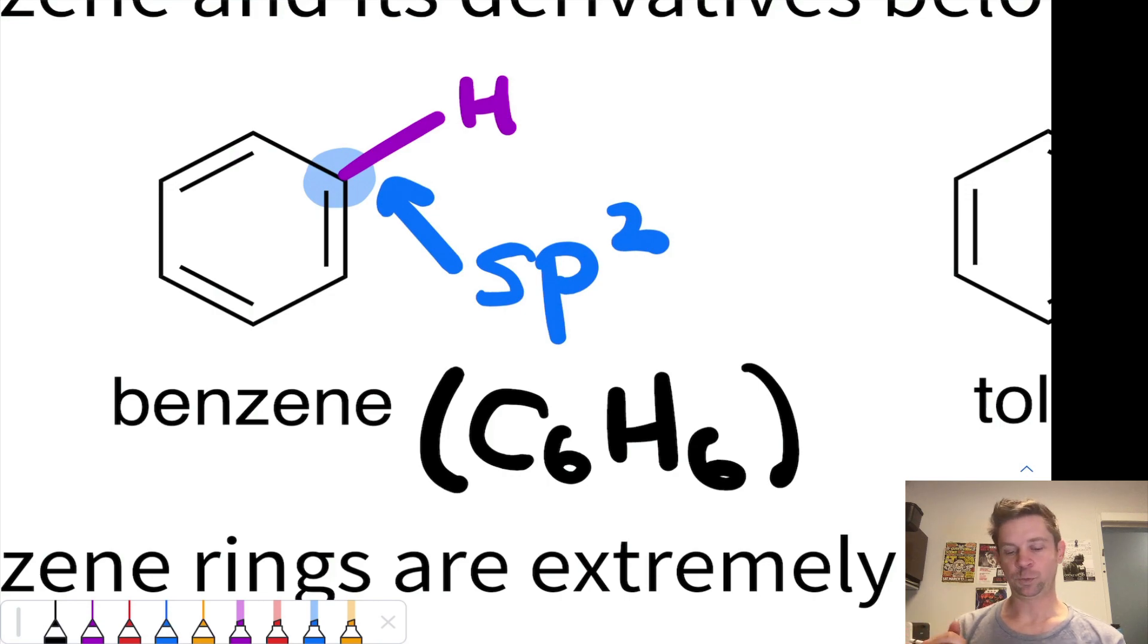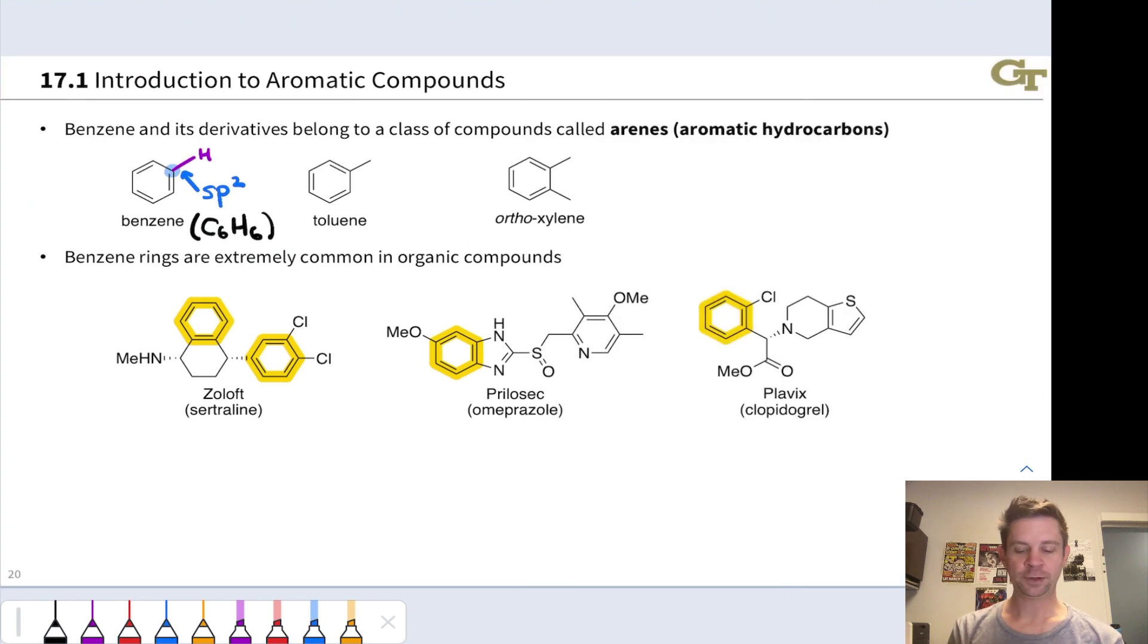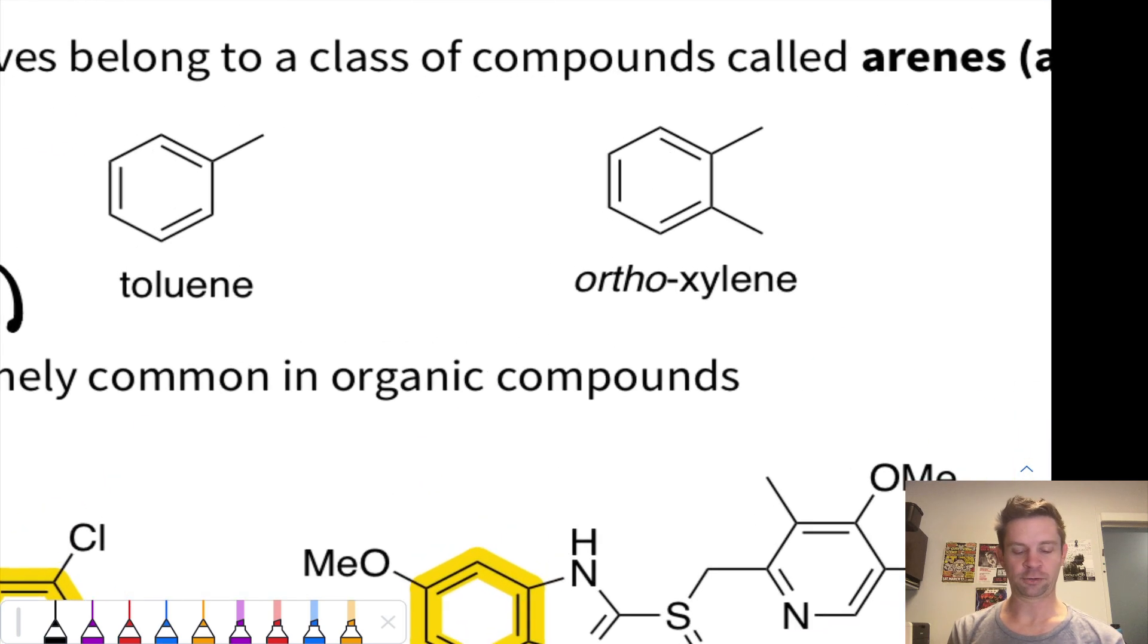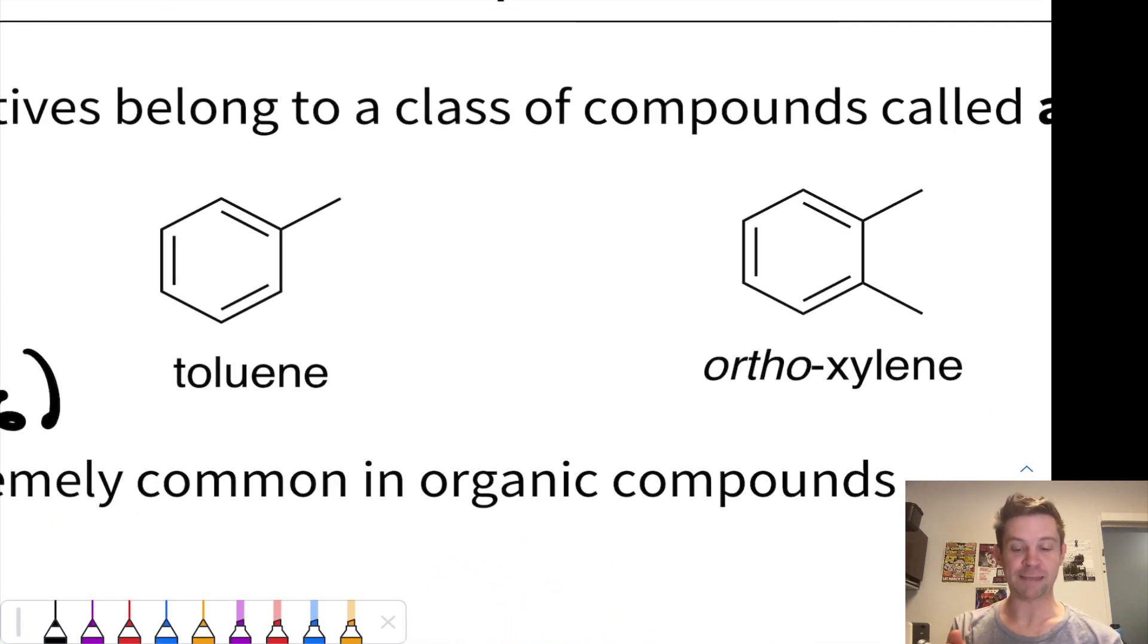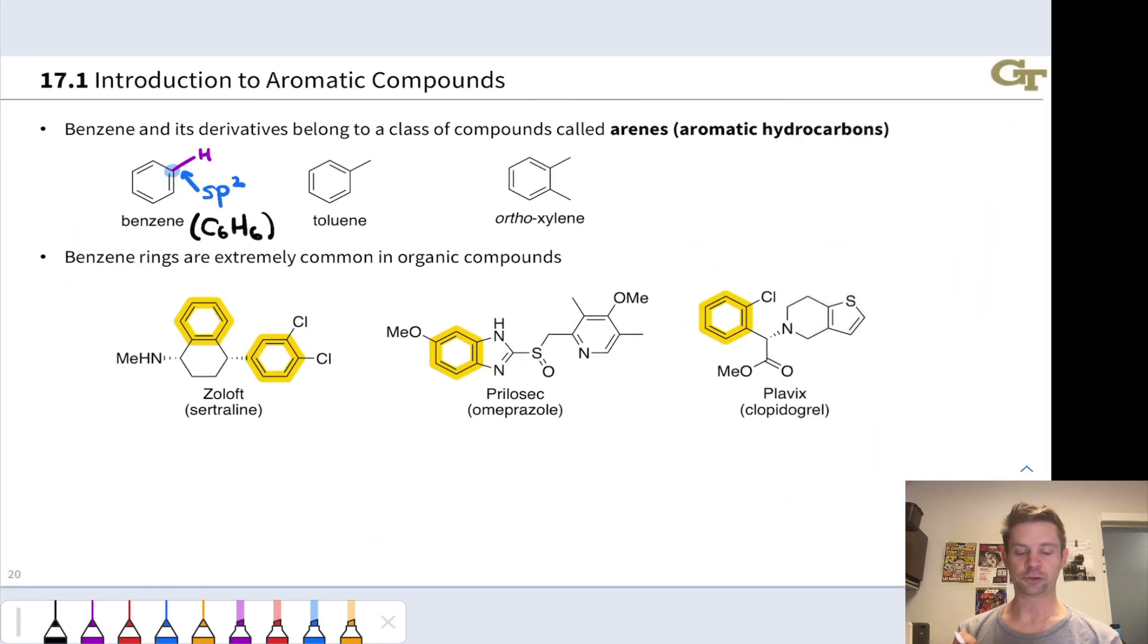There are derivatives of benzene in which we replace one or more of these hydrogens with some other group. Two examples of those derivatives are shown here. Toluene is methyl benzene, where one of the H's has been replaced with the methyl group, and xylenes are benzenes in which two of the H's have been replaced with two methyl groups. This in particular is ortho-xylene in which those methyl groups are in a 1-2 or adjacent relationship.